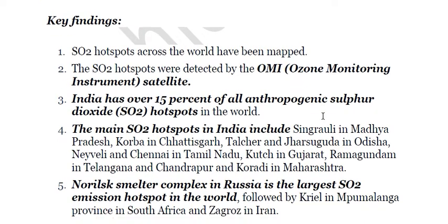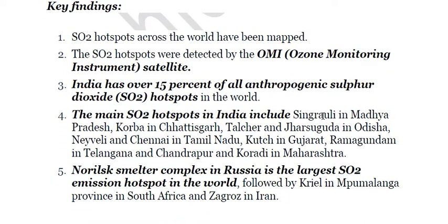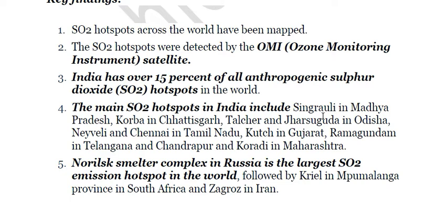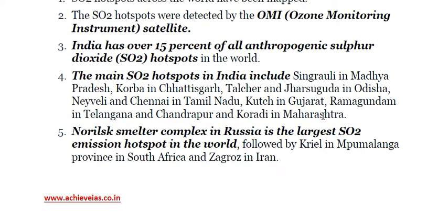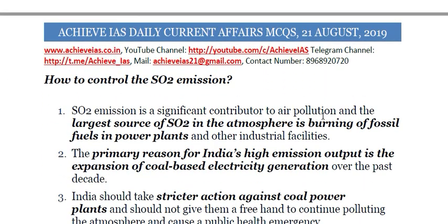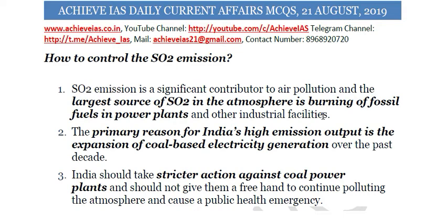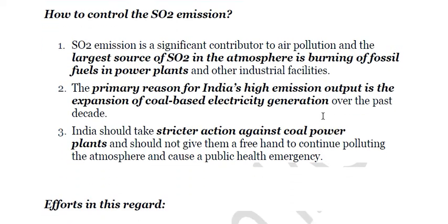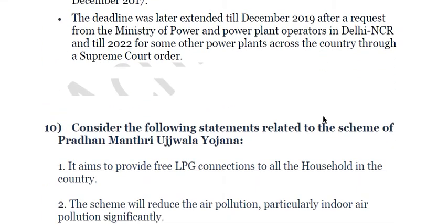The SO2 hotspots were detected by the Ozone Monitoring Instrument satellite — please note this, as it could be asked in exams. Fifteen percent of hotspots are in India, but the largest single SO2 emission hotspot globally is the Norilsk Smelter Complex in Russia. To control SO2 emissions, measures include stricter norms, shifting to renewable energy, and stricter action against coal power plants.